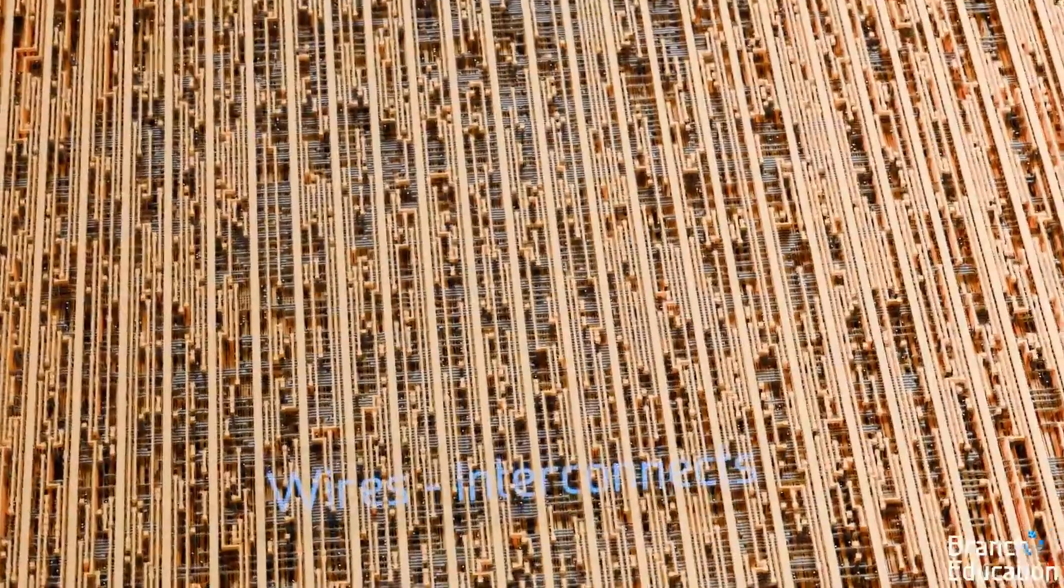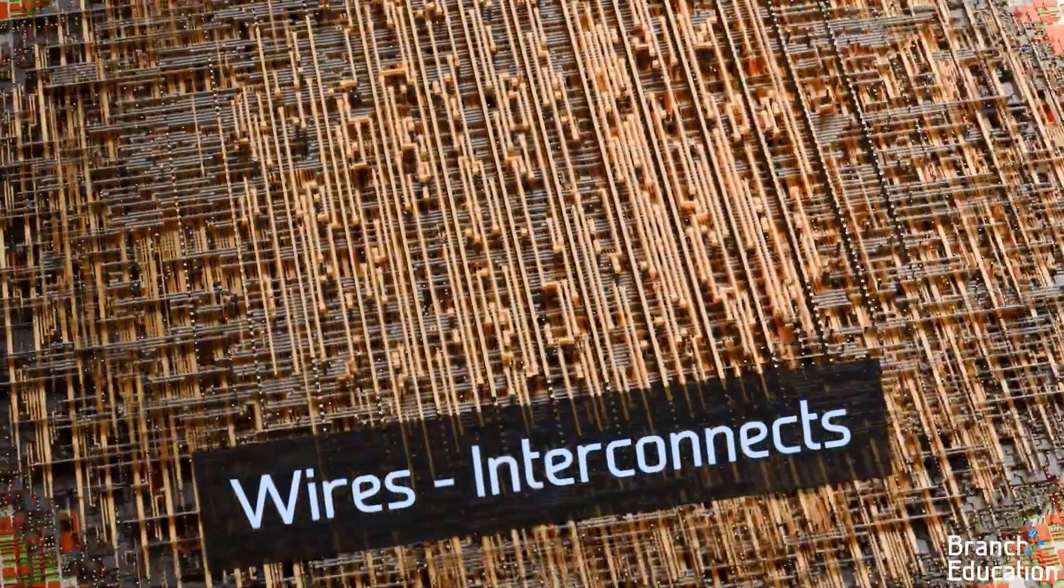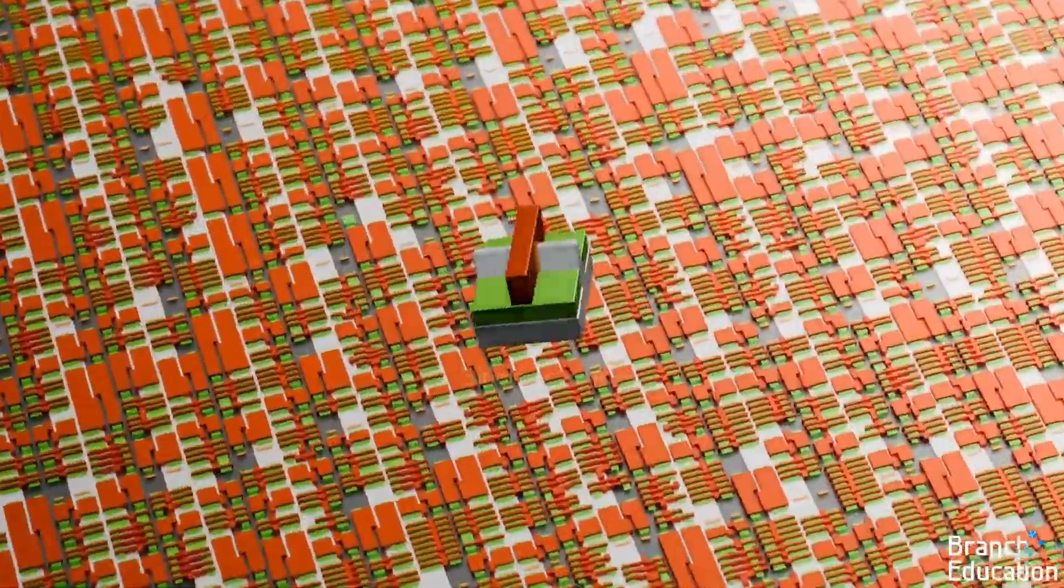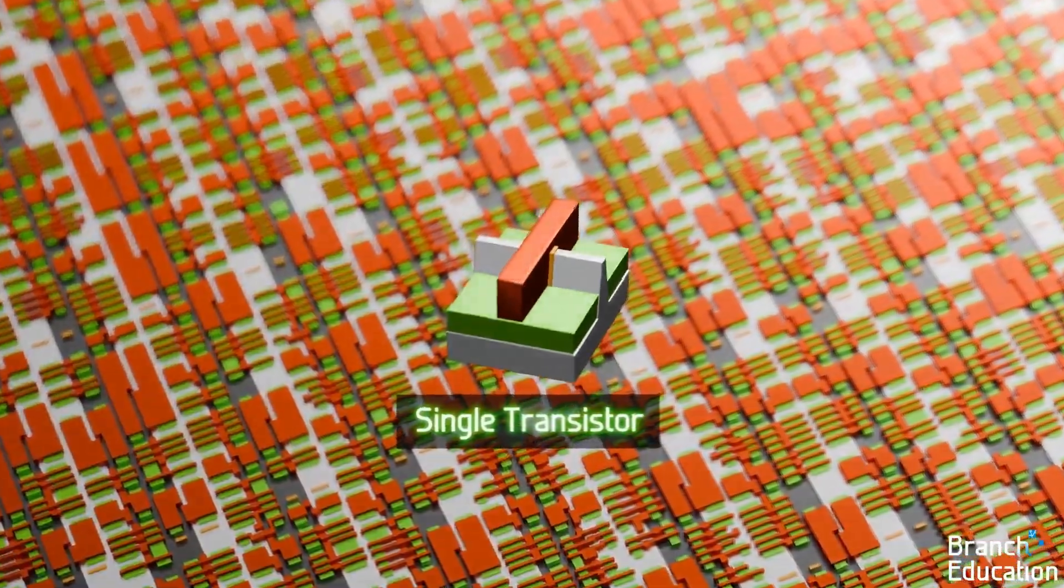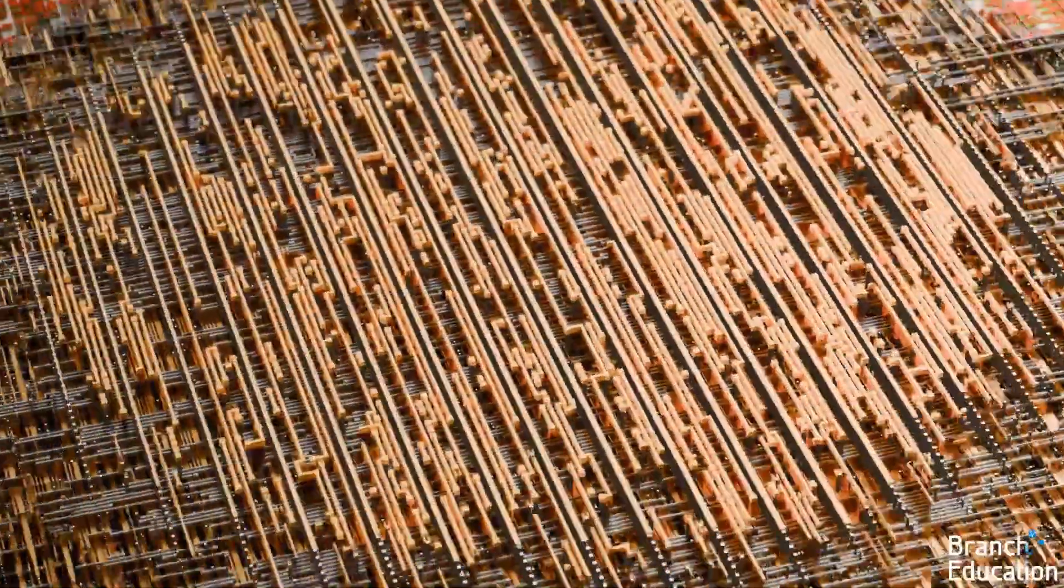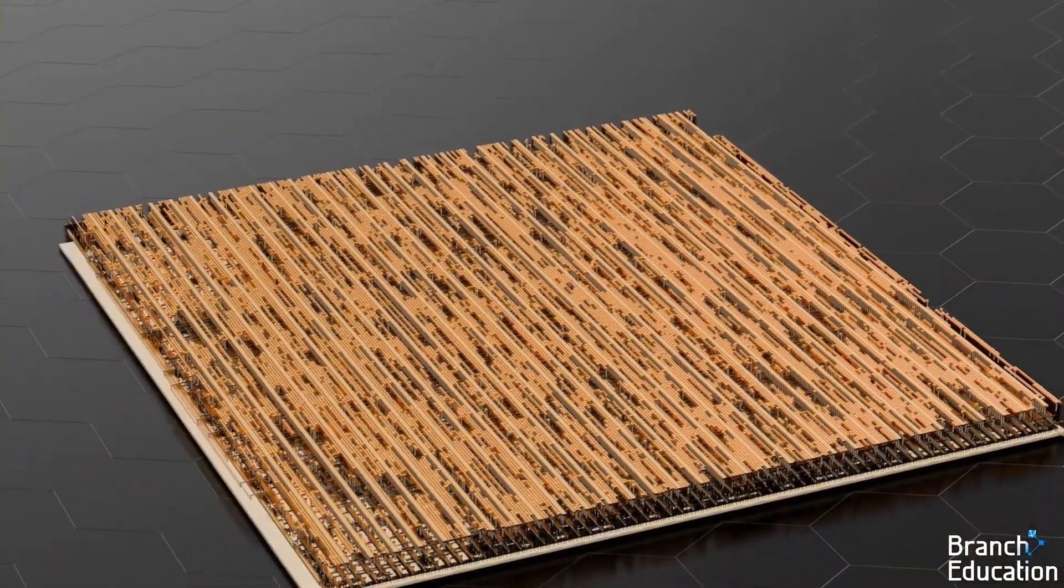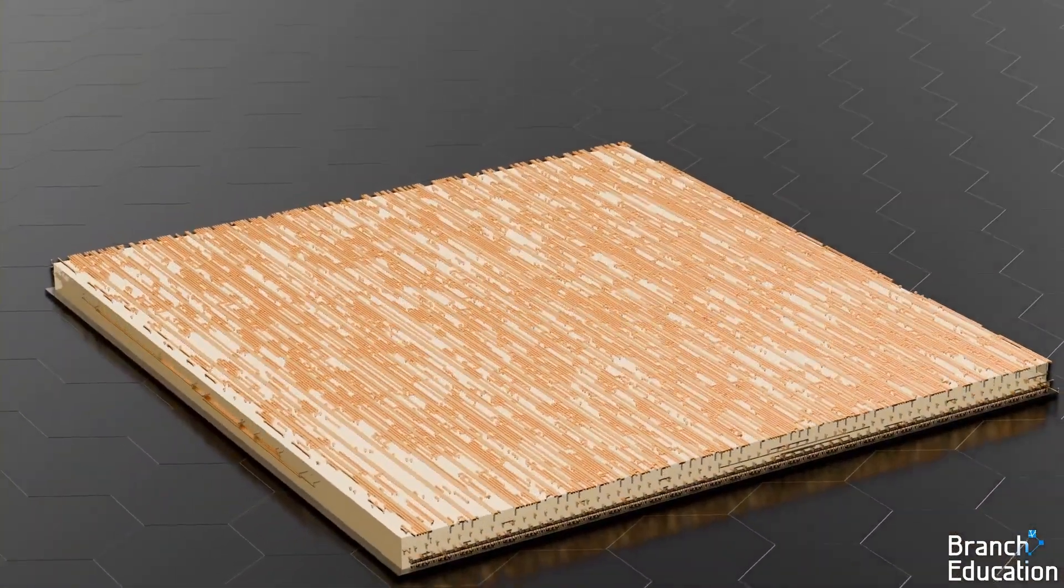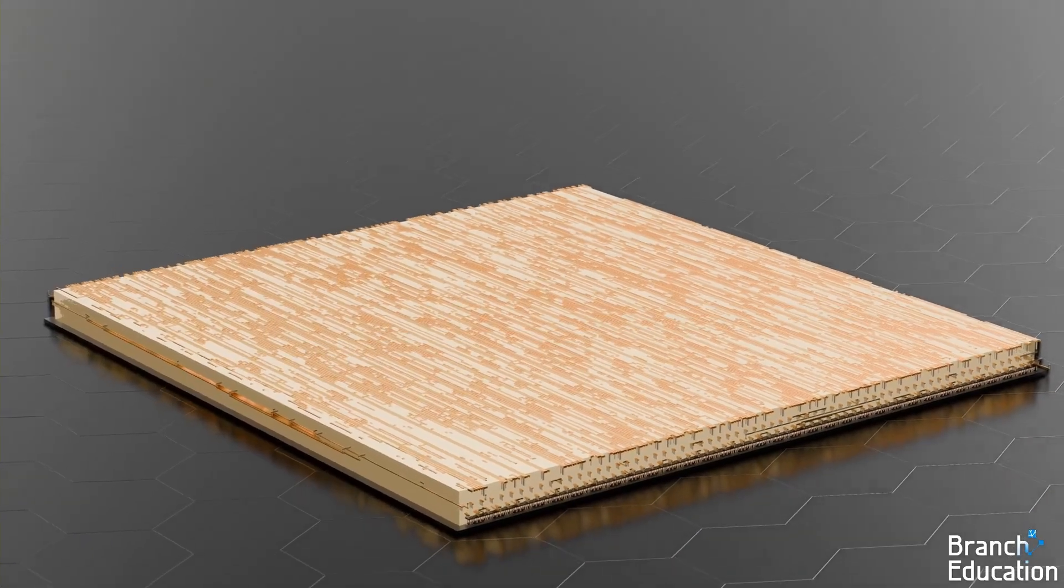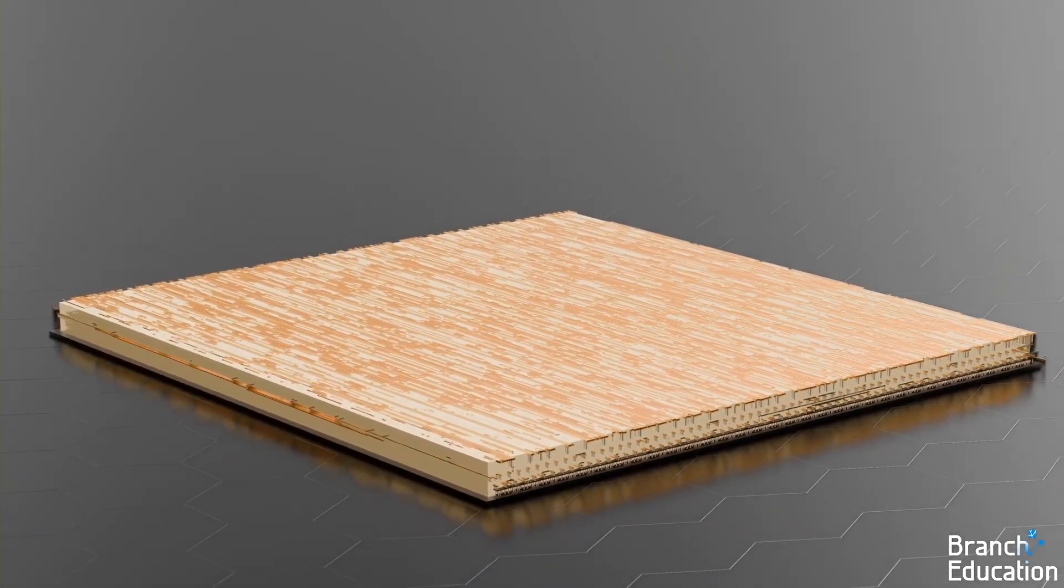Zooming in even further, we see layers of metal wires, or interconnects, and at the very bottom are the transistors that form the basic logic gates. Note that these layers of metal interconnects aren't floating, but rather, the empty space that you see is filled with insulating materials, thus providing structure and preventing the metal wire layers from touching.